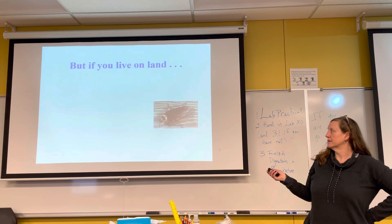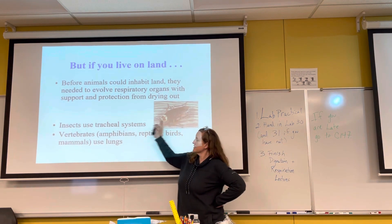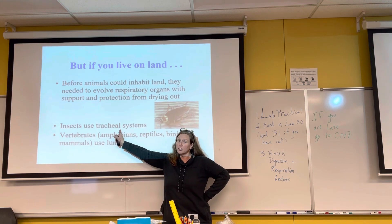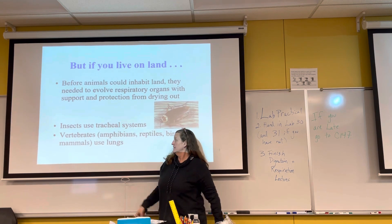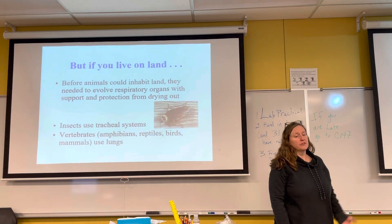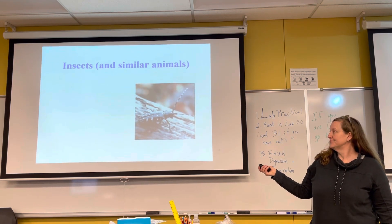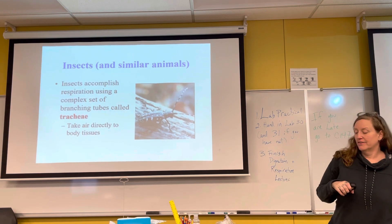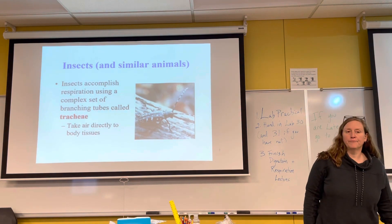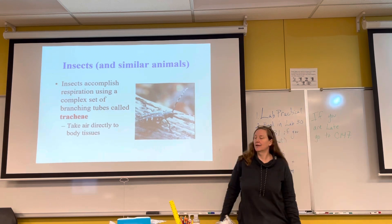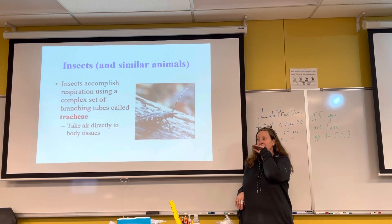If you live on land, let's talk about bugs — cockroaches, for example. Insects use what's called a tracheal system, meaning they have more than one trachea. Vertebrates use lungs, which also have a trachea. Insects have branching tubes called trachea, but their trachea are on the sides of their bodies — they do not have a trachea at their mouth like we do.